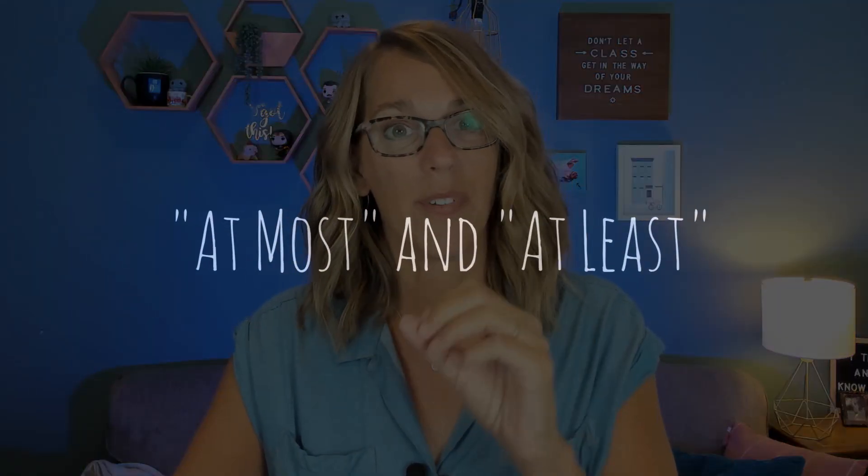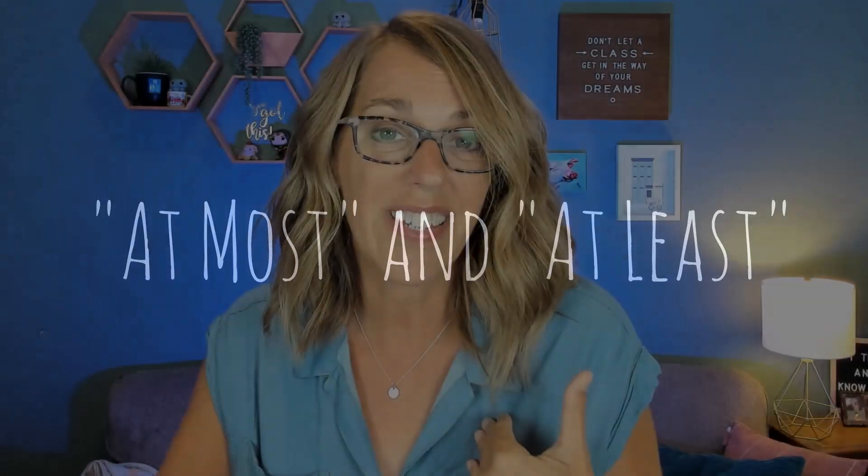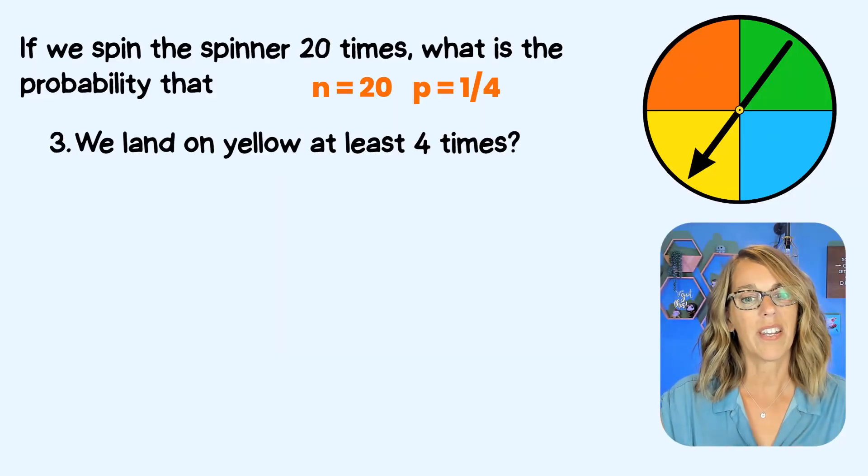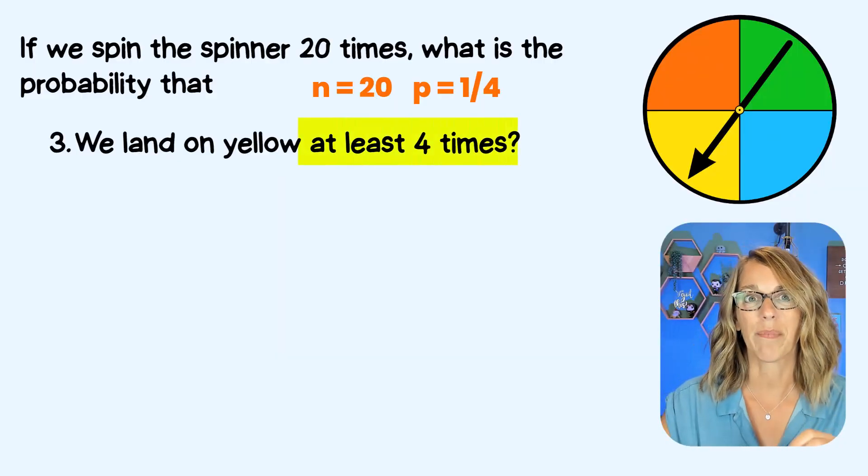And I find that these tend to be the most challenging for my students. Let's make these easy with the TI Inspire. Number three is the probability of getting yellow with these 20 spins at least four times.